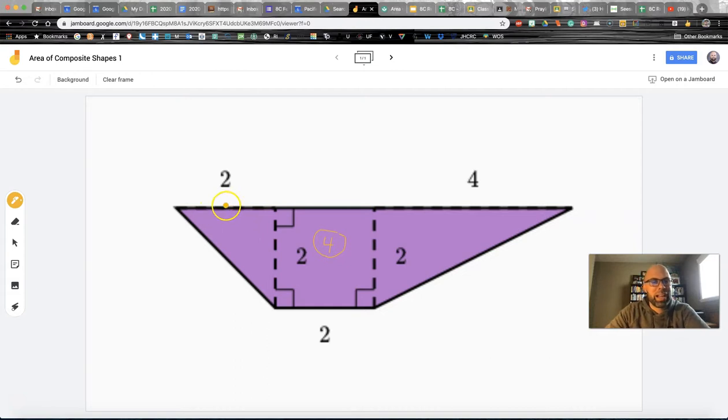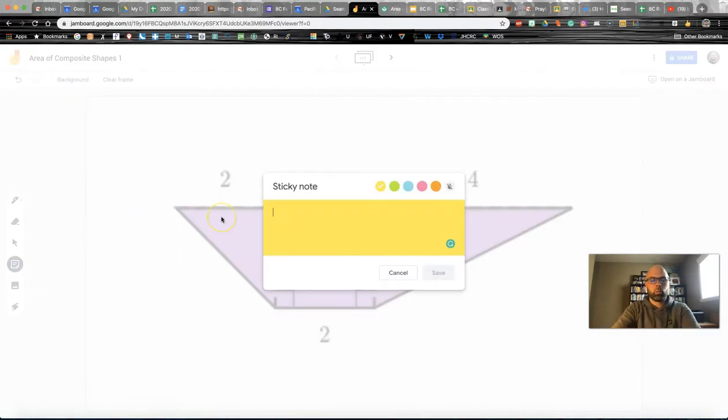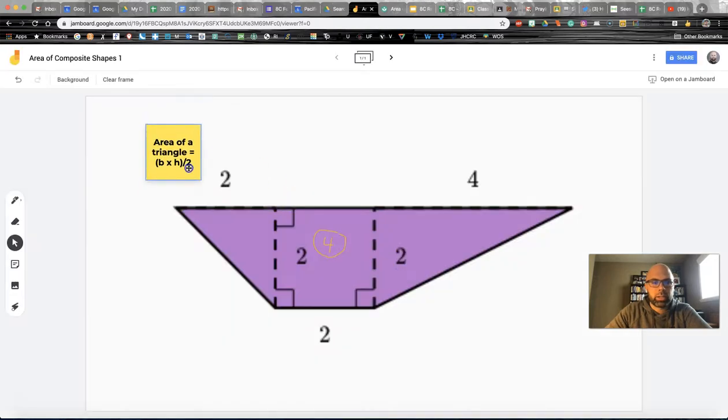And then over here we've got a triangle base of two and height of two. Now keep in mind, what is the formula for area of a triangle? Equals base times height divided by two. Okay so let's keep that in mind. I'm going to leave that little sticker there.